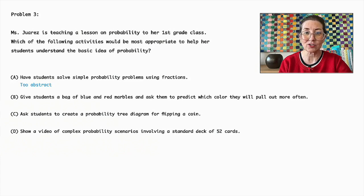Option C asks students to create a probability tree diagram for flipping a coin, which again might be too complex and abstract for young children at this stage of their learning.